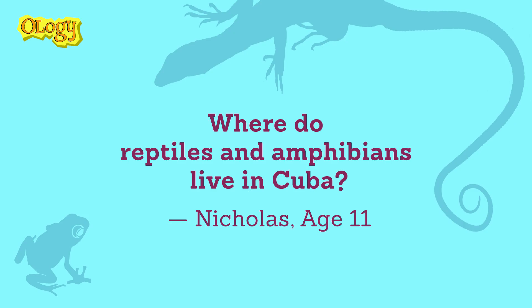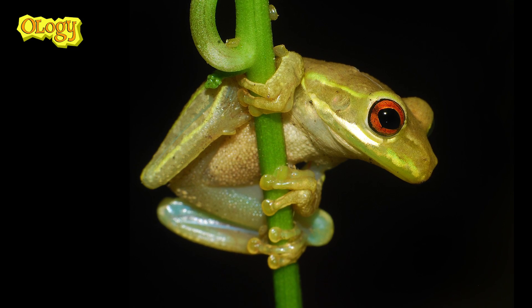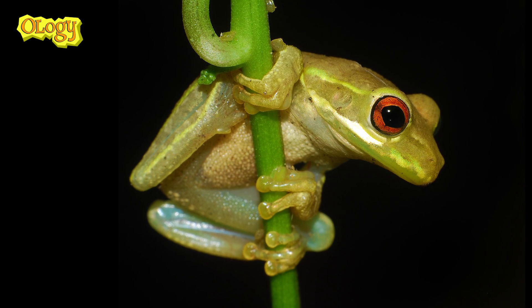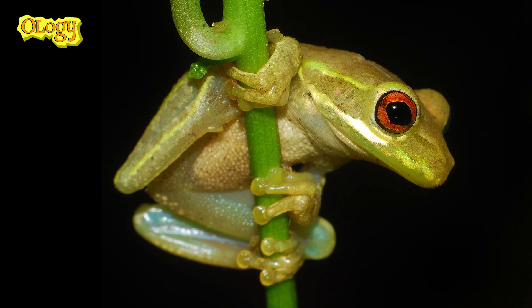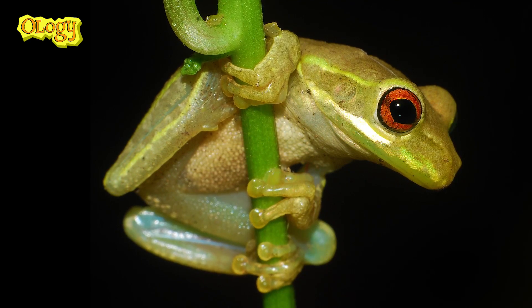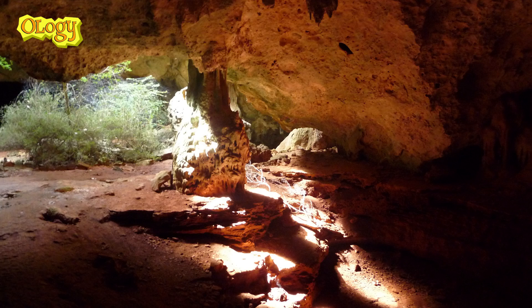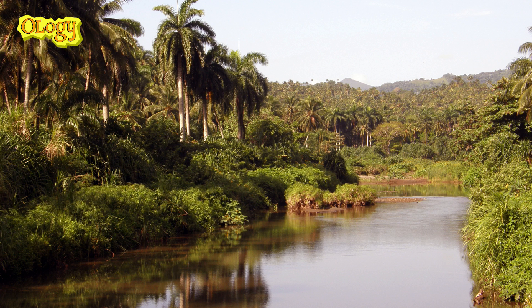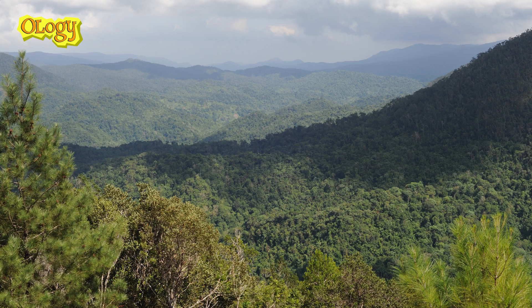Where do reptiles and amphibians live in Cuba? Reptiles and amphibians in Cuba live pretty much everywhere, which is kind of cool. You can be in towns and find things like Cuban tree frogs living in gardens — these are actually quite toxic, large tree frogs, and very beautiful. You can also find amphibians in Cuba in caves, rivers and streams, deep in rainforests, and also some species that are adapted to dry conditions.